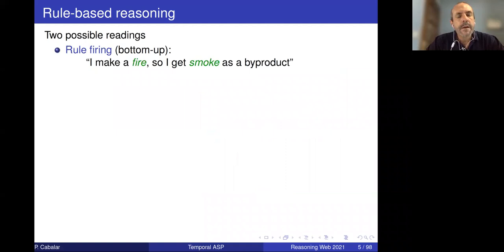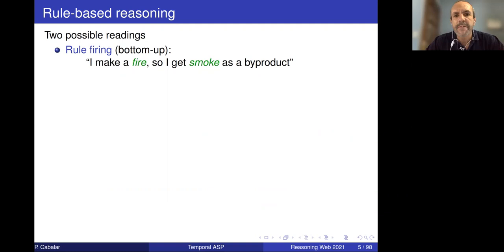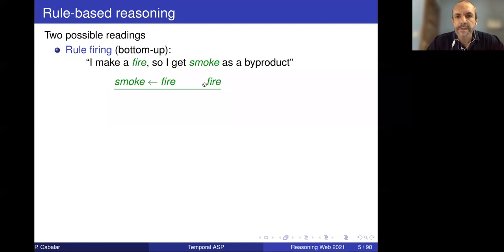When you see a rule, you have two possible readings. The first, more or less causal reading, is using the rule for firing it — this is the bottom-up reading. If I make a fire, I will get smoke as a byproduct. This is nothing else but what we call modus ponens application in logic: we have the implication and the antecedent, so we can conclude the consequence. This is called modus ponens.